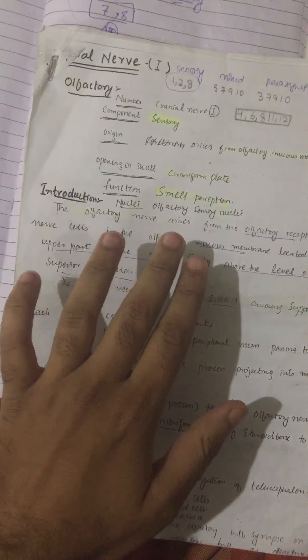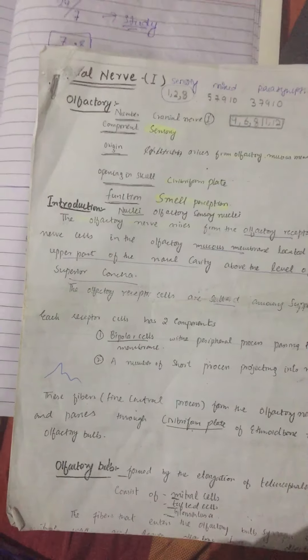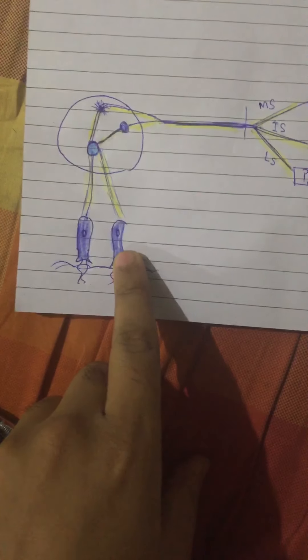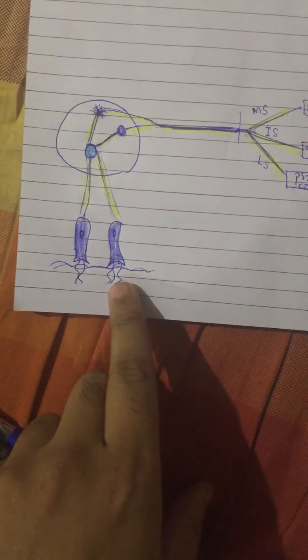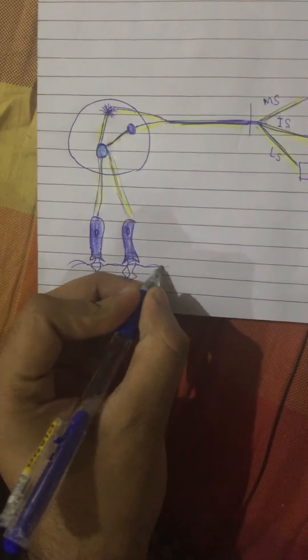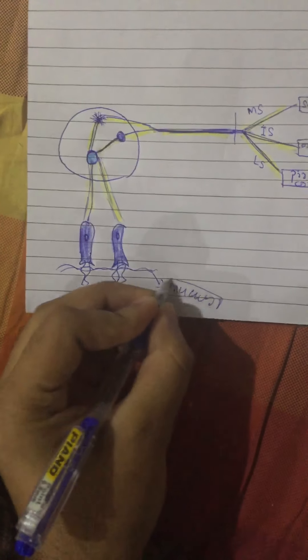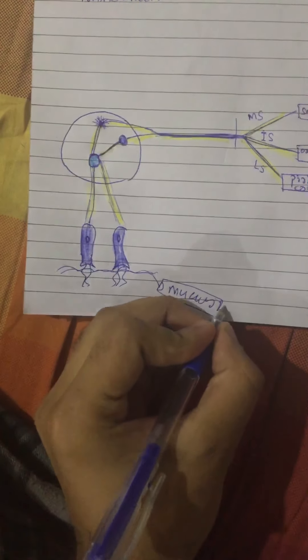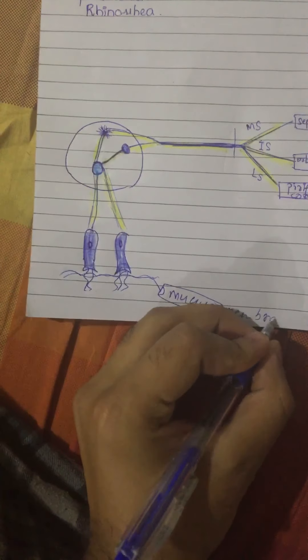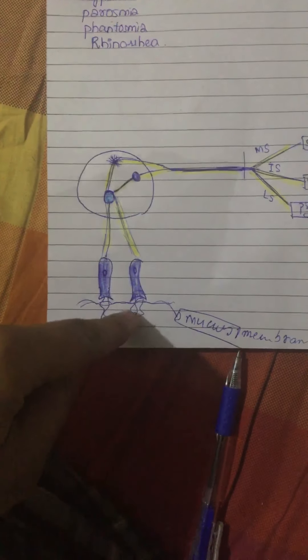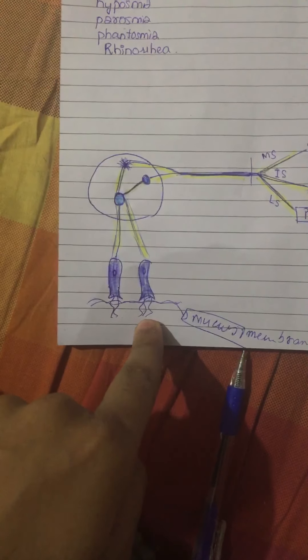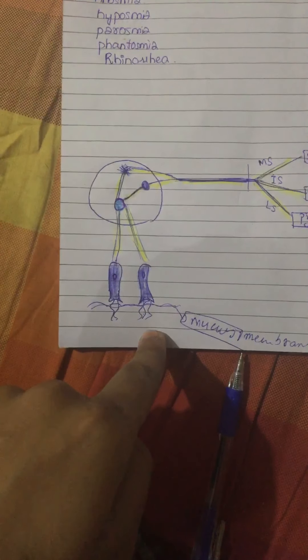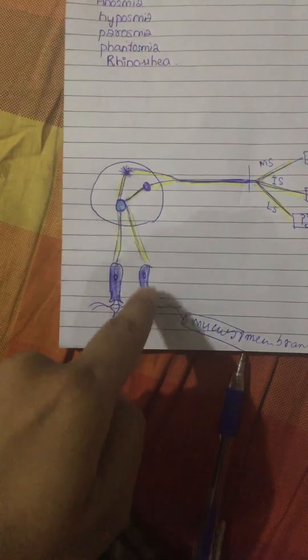The nuclei of the olfactory nerve are known as the olfactory sensory nuclei. The pathway begins at the olfactory receptors — the olfactory cell has cilia, and the nose is lined with a mucous membrane. Within the cilia are olfactory receptors, which receive different kinds of smells, and these signals are sent to the olfactory cell.